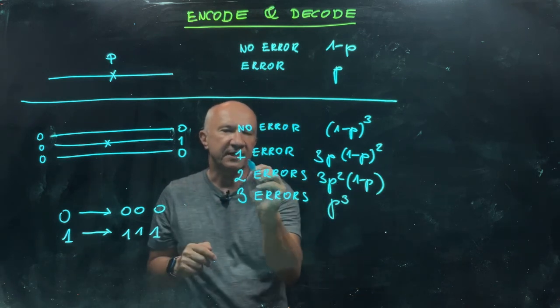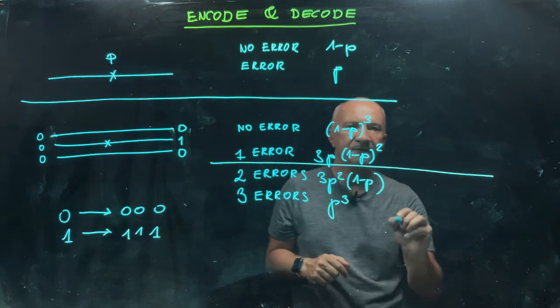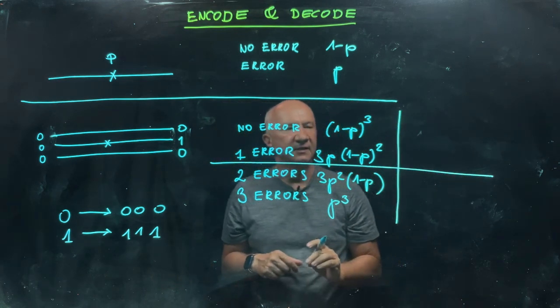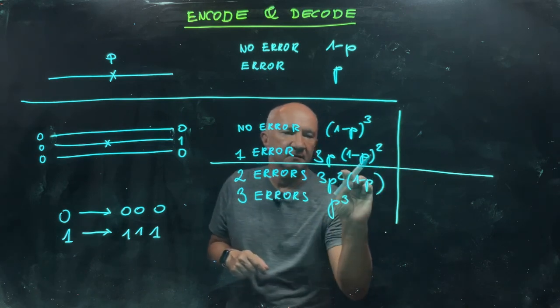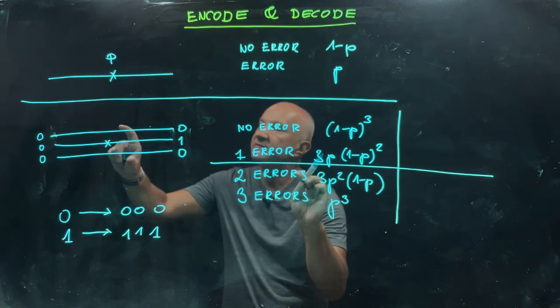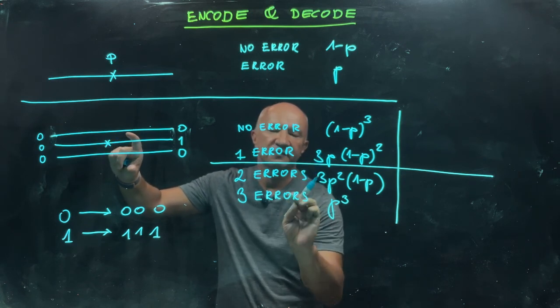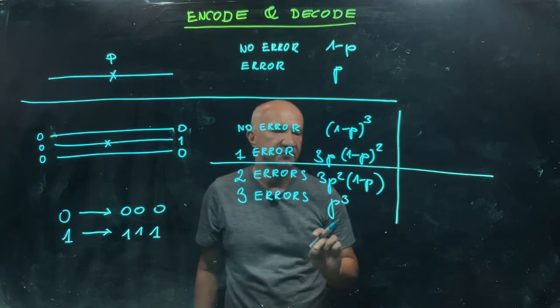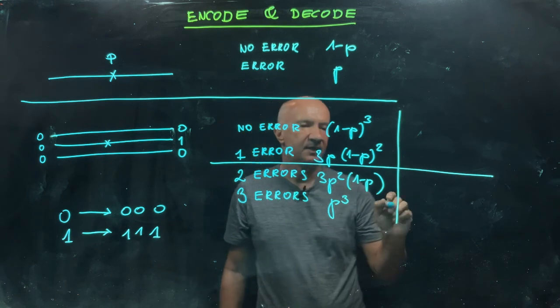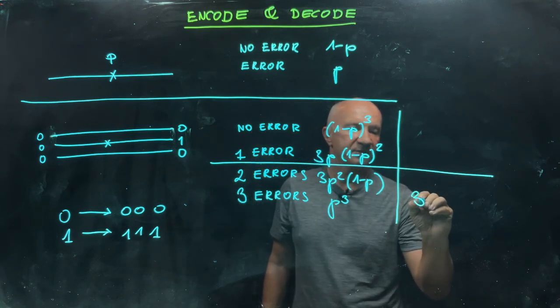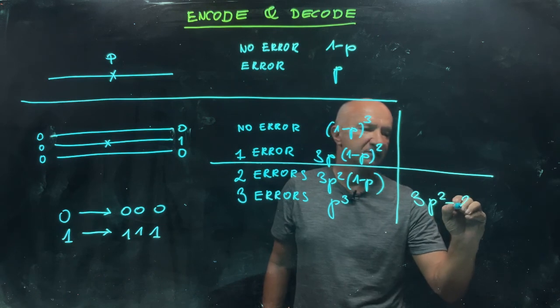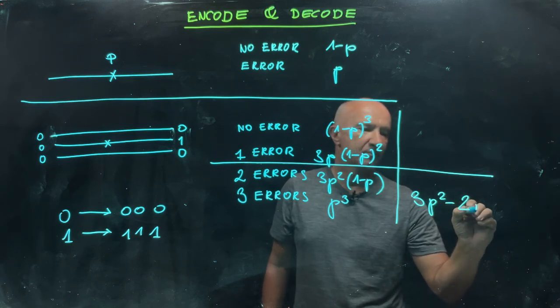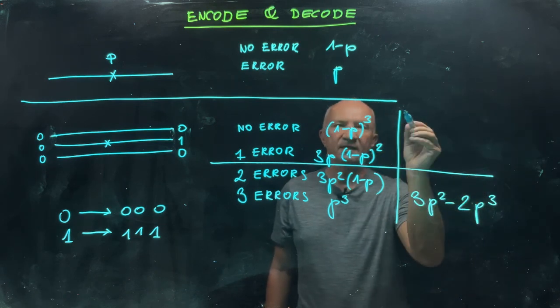When we apply the majority rule, one error is corrected. Let's draw a line here because now effectively, the probability of error will be the probability that two physical errors happen or three physical errors happen during the transmission.